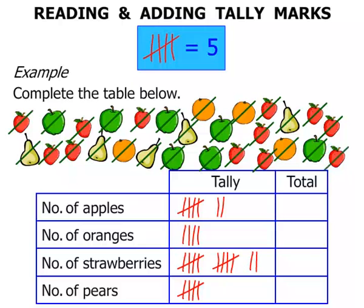Terrific. So now we've completed the tally column. We now total them up. The number of apples — there's a five and a two, that's seven. Number of oranges — simply four. Number of strawberries — well, we've got two fives, that's ten, and two more makes twelve. And finally the number of pears — simply five.